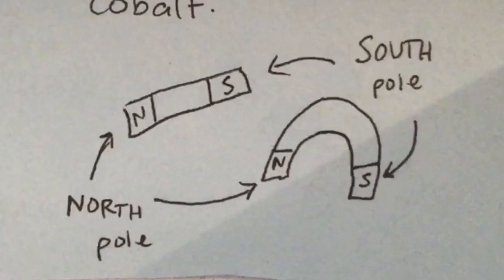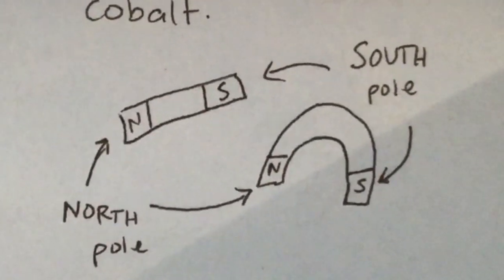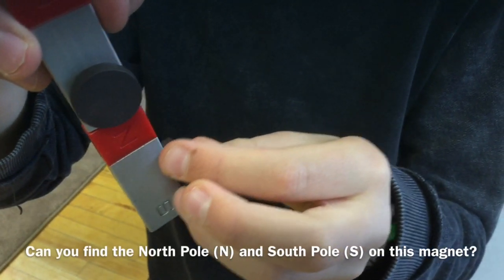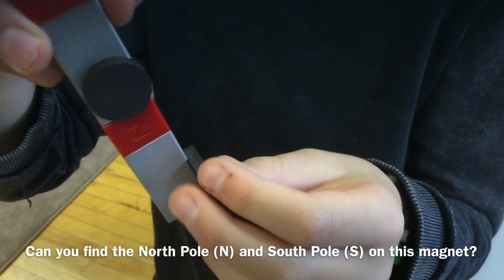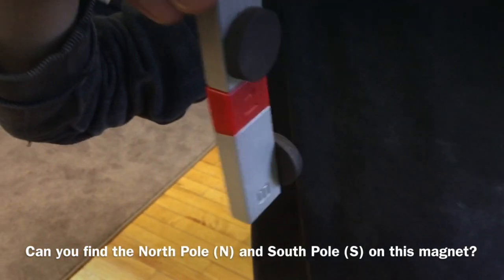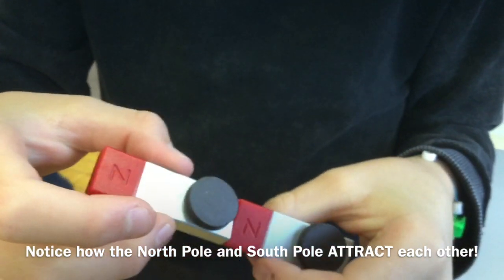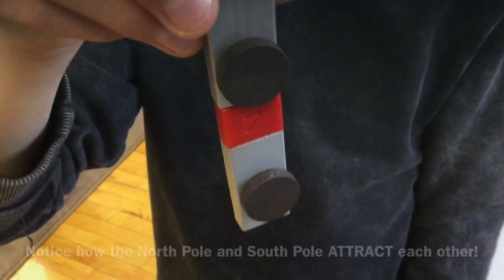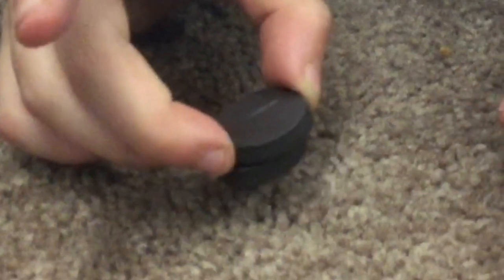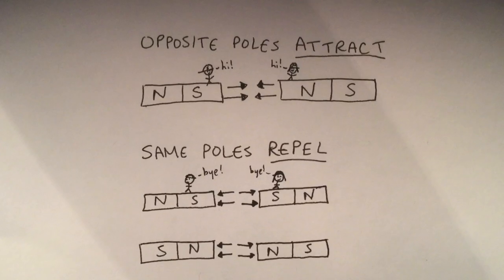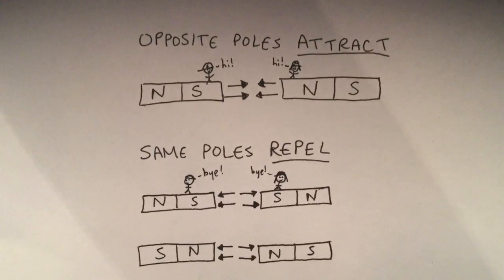Magnets also have a north pole and a south pole. Can you find the north pole (N) and the south pole (S) on this magnet? Notice how the north pole and the south pole attract each other. Remember that opposite poles attract and the same poles repel.